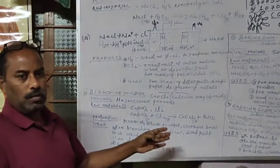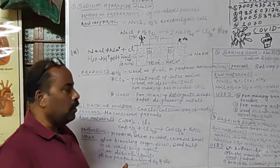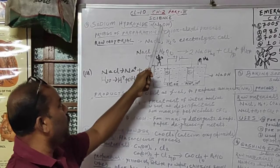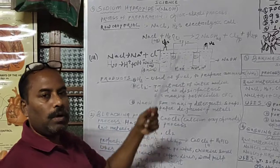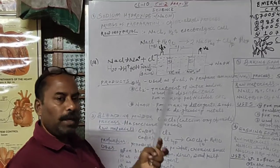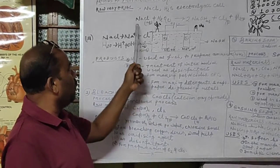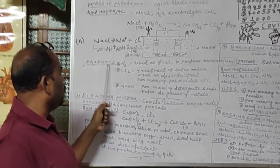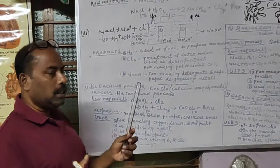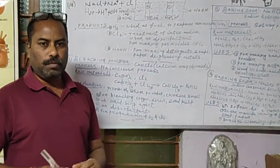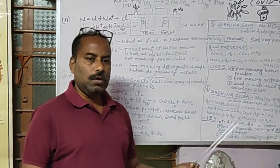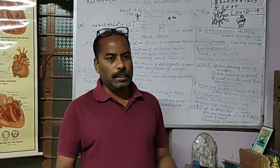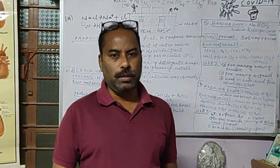These are the major compounds in this chapter that come in our everyday life. For each compound, you must prepare: the chemical formula, chemical name, the process by which it is prepared, raw materials required, the chemical equation involved, the major products obtained, their properties, and their uses — at least three to four of each. This is the third and final part of Chapter 2. The next video will cover Chapter 10.